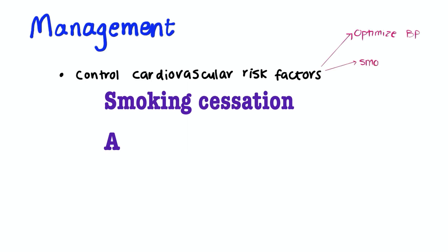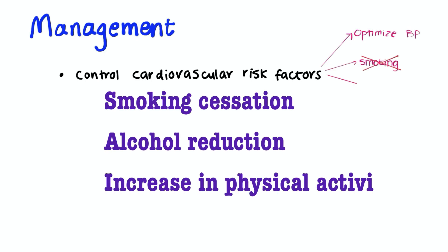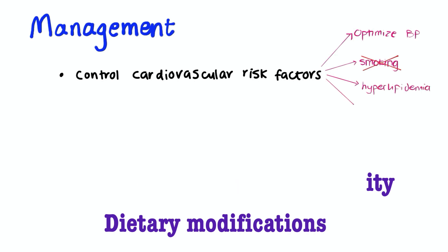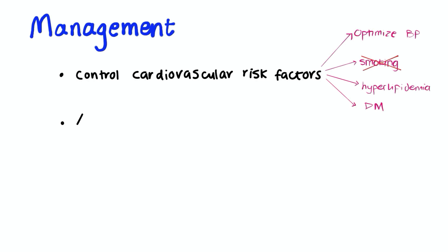Lifestyle modifications include cessation of smoking, reduction of alcohol consumption, increase in physical activity and dietary modifications. Next up in management is stroke prevention.